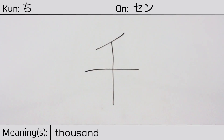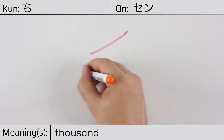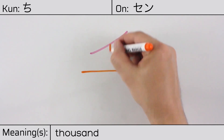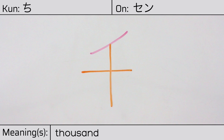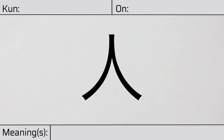This character is made up of the following radicals or parts: katakana no, then ten or complete, jiu. You can remember this kanji by the following hint: the many ancestors in heaven. Our example sentence is: Senensatsu kuzuremasuka? — Can you break a thousand yen bill?